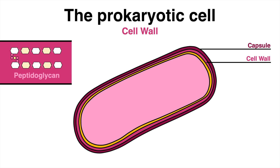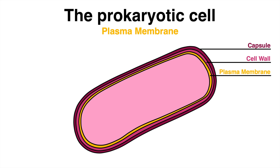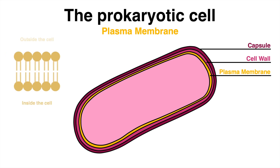The interior of the cell is surrounded by a plasma membrane that acts as a barrier between the inside of the cell and the external environment. The plasma membrane is made up of lipids and proteins and is selectively permeable, meaning that only certain molecules can pass through it.